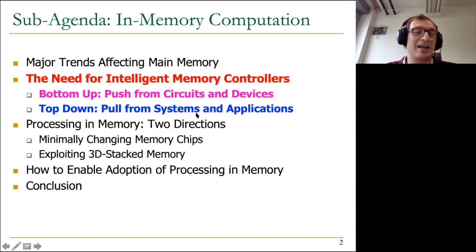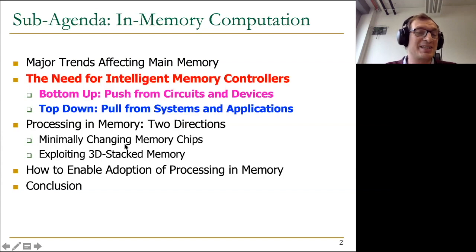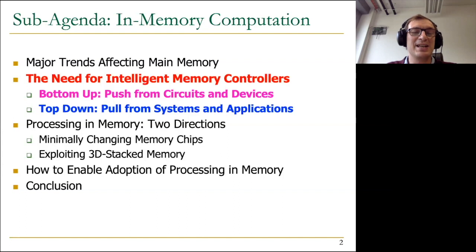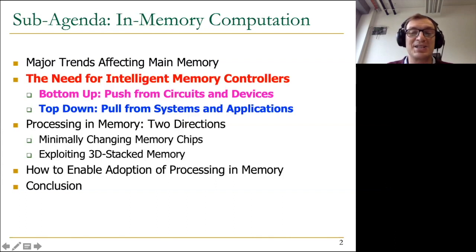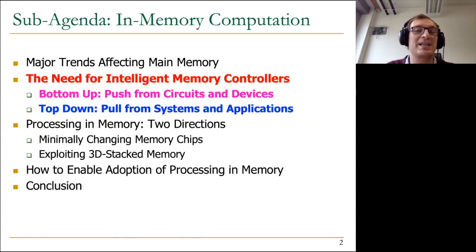There's another reason why we actually want to execute applications close to memory, which is performance and efficiency. I'm going to give you that top-down perspective now, and then we'll talk about processing in memory going in at least two directions — two very interesting directions enabled by creativity and new technologies. We'll also spend some time on adoption and then conclude. A good chunk of the industry is very interested in this because they're feeling the data movement bottleneck.